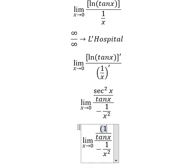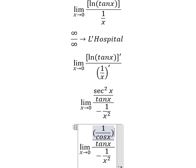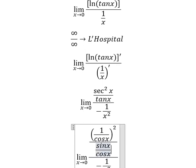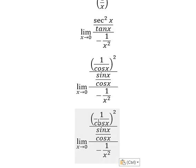We know that secant of x is one over cos x with the power two, and tan x is sin x over cos x. Now we simplify cos x cos x.